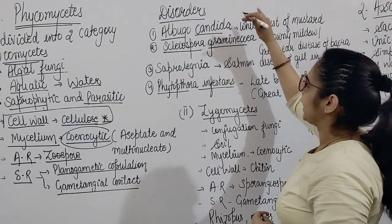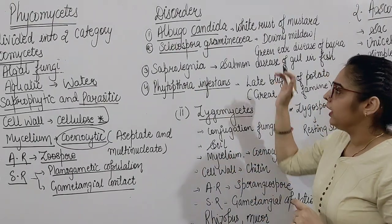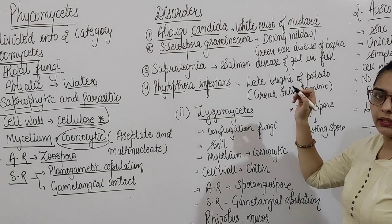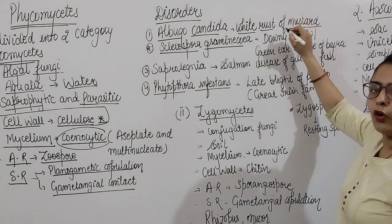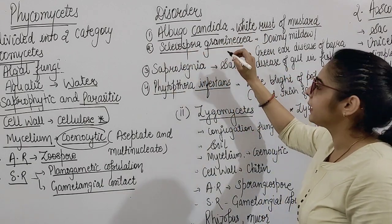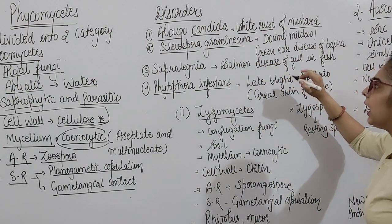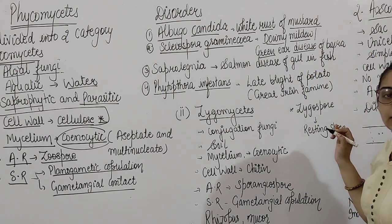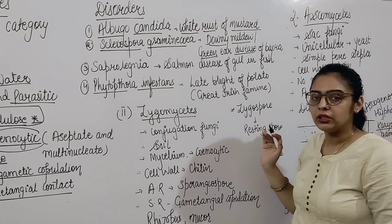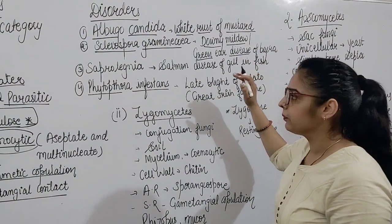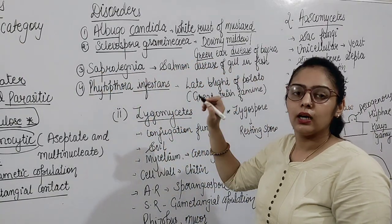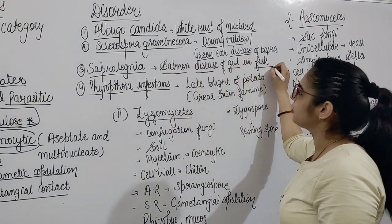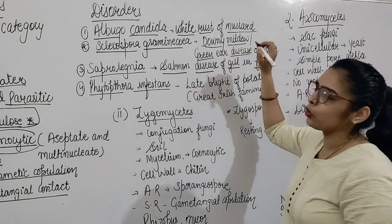The first example of Oomycetes is Albugo candida, which causes white rust of mustard. Second is Sclerospora graminicola, which causes downy mildew or green ear disease of bajra. Third is Saprolegnia, which causes salmon disease of gills in fishes.